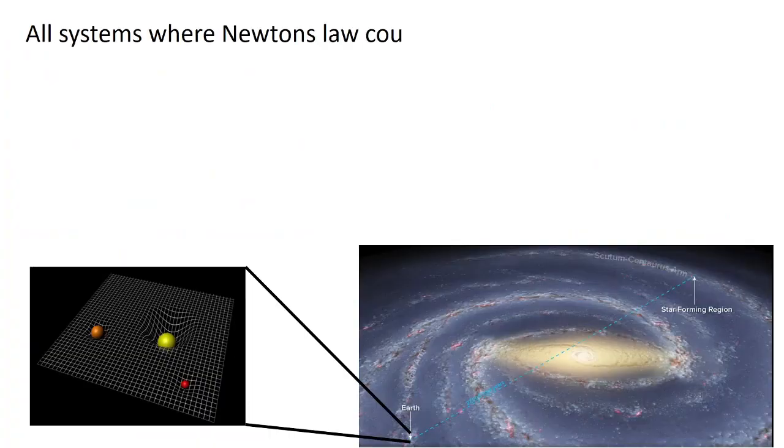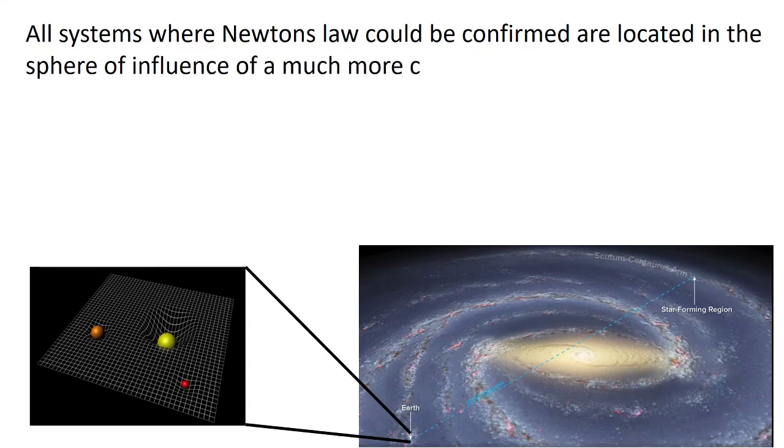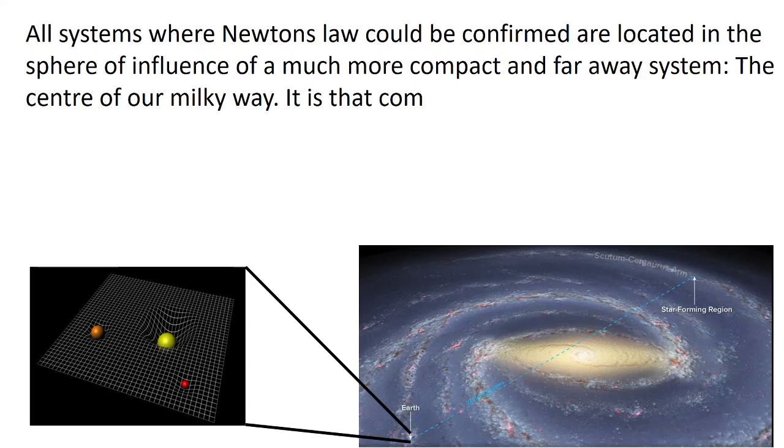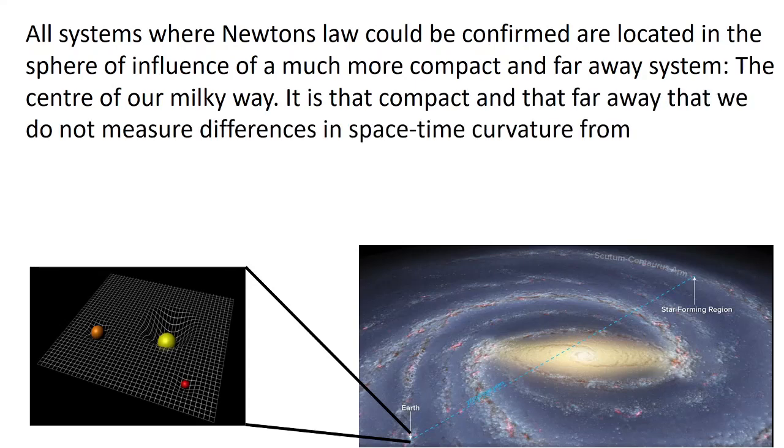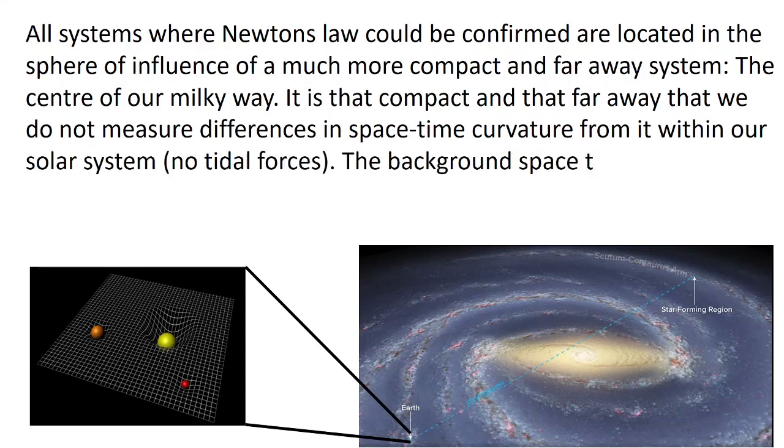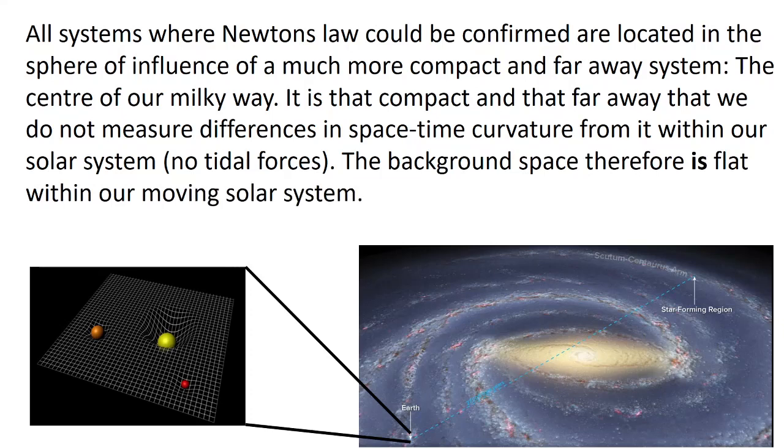All systems where Newton's law could be confirmed are located in the sphere of influence of a much more compact and far away system, the center of our Milky Way. It is that compact and that far away that we do not measure differences in spacetime curvature from it within our solar system, no tidal forces. The background space, therefore, is flat within our moving solar system.